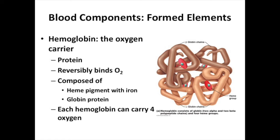Each hemoglobin molecule is capable of carrying four molecules of oxygen (O2). Notice it reversibly binds oxygen — it needs to carry it, but hemoglobin also has to let the oxygen go when it reaches an area where it's needed. How does it know when to release? When the blood gets to a tissue with low oxygen — like the muscles of your pinky toe — that low-oxygen environment triggers hemoglobin to release its oxygen so it can move into the tissues.